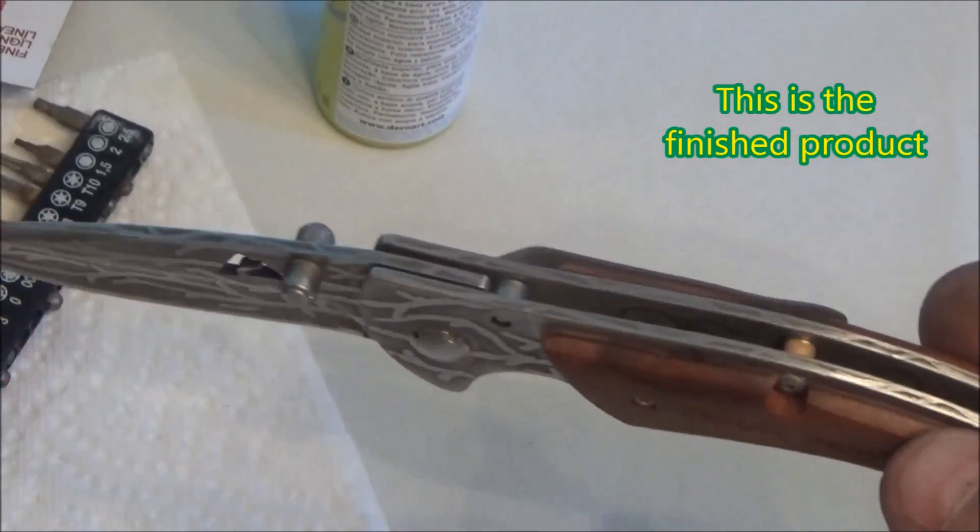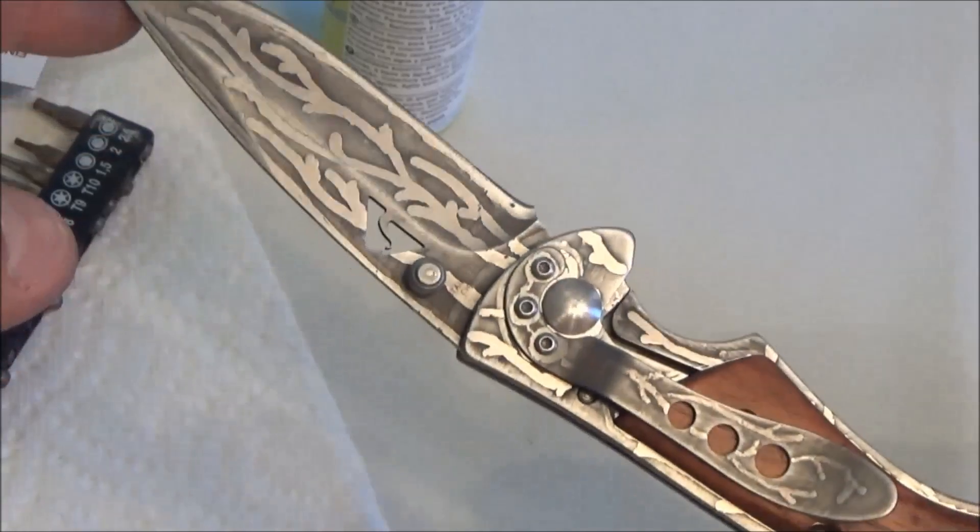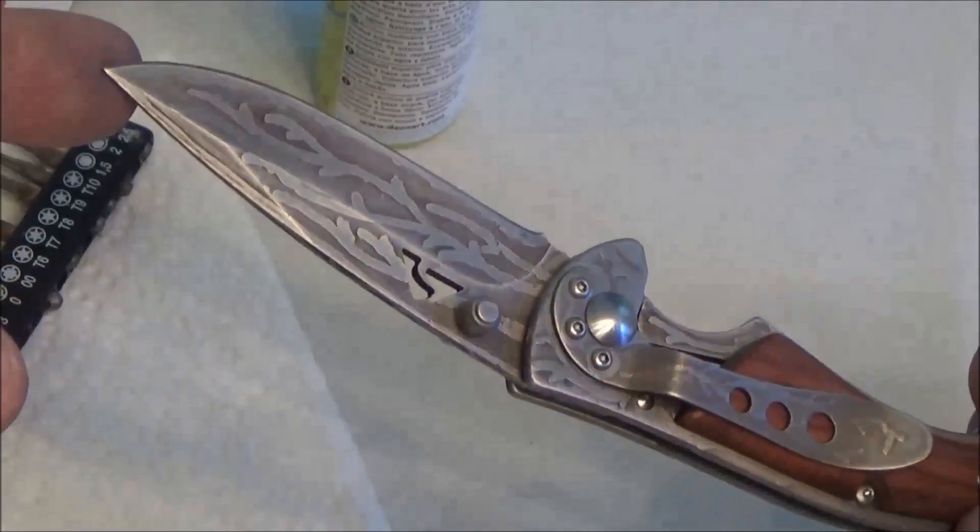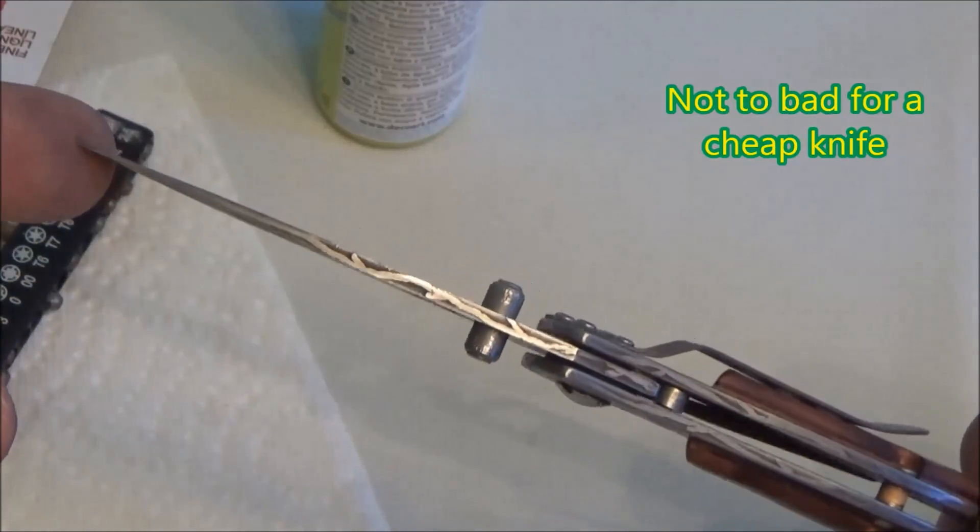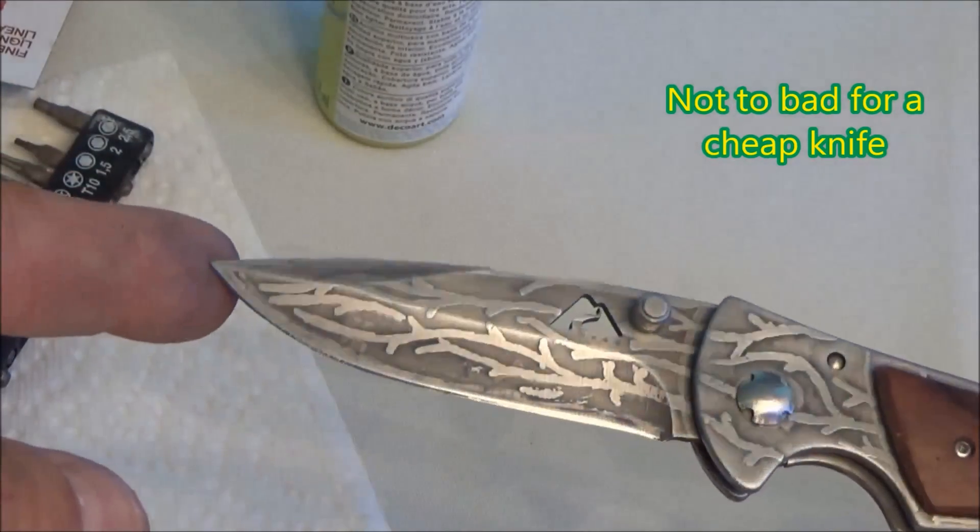I think it came out very nice for my first attempt. Again, I used ferric acid, and this is a stainless steel blade for a total etch time of about 55 to 60 minutes.